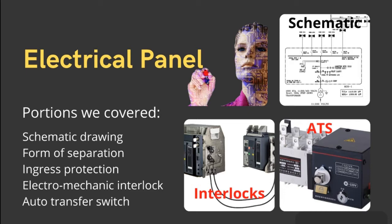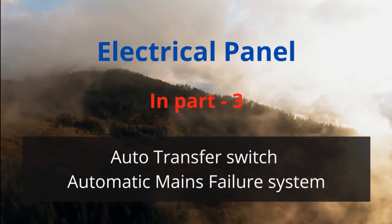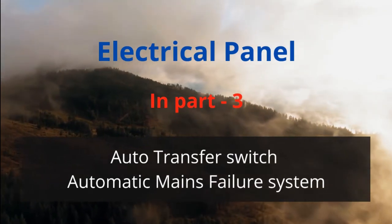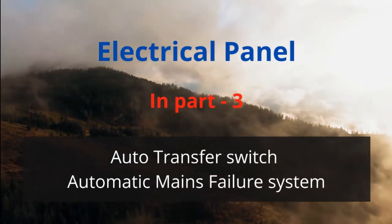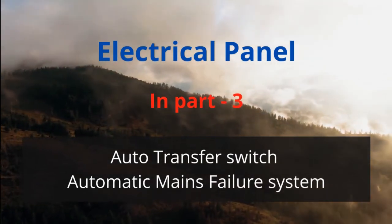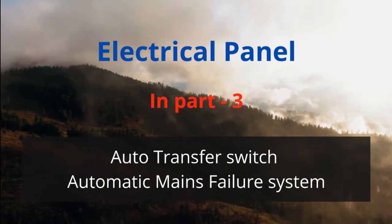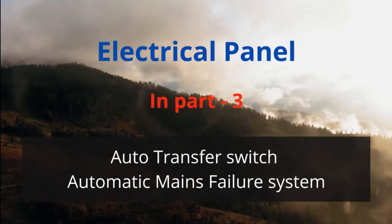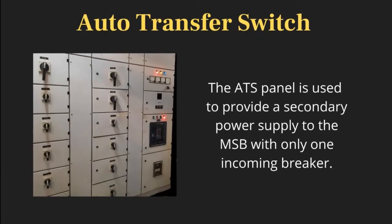Topics from previous parts include: Schematic Diagrams and Importance, Form of Separation and Ingress Protection, Electromechanical Interlock, and Auto Transfer Switch. The portions included in Part 3 cover the Automatic Transfer Switch and the Automatic Mains Failure System. Let us proceed from the previous part.